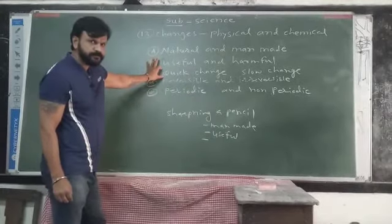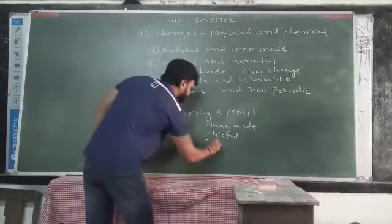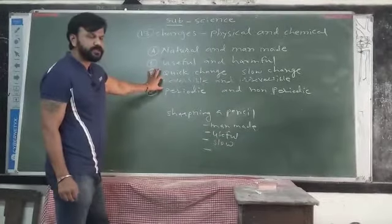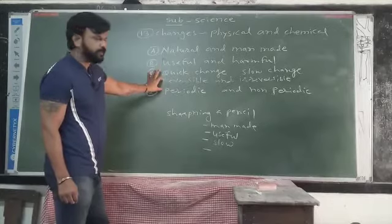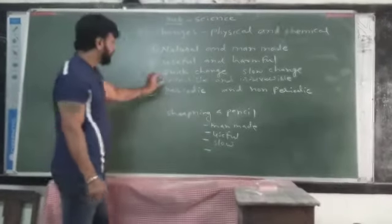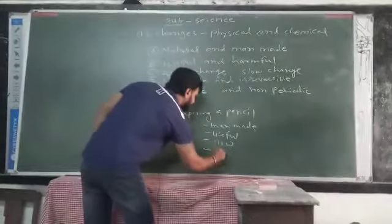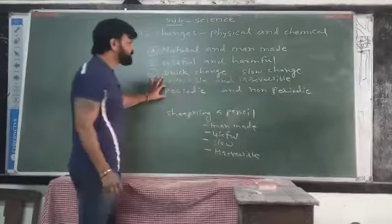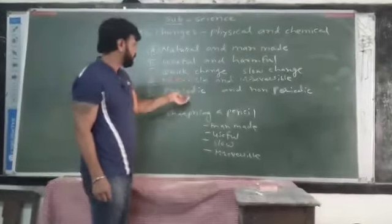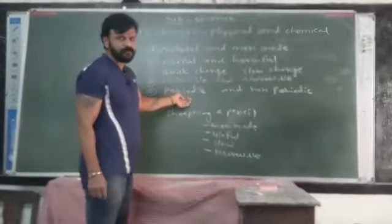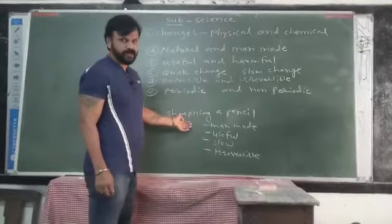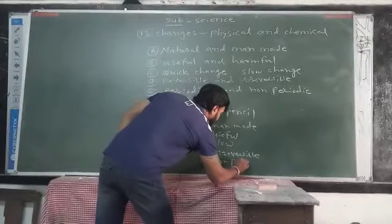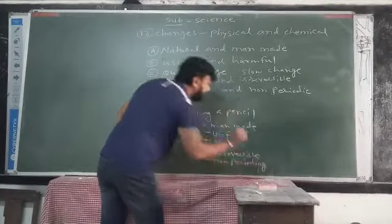Is it quick or slow? It is a slow change. Is it reversible or irreversible? Once a pencil is sharpened, we cannot unsharpen it. So it is irreversible. Is it periodic or non-periodic? There is no specific time. We sharpen a pencil as per our need. So it is non-periodic.